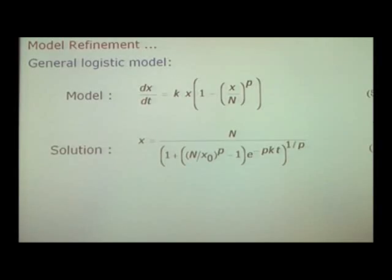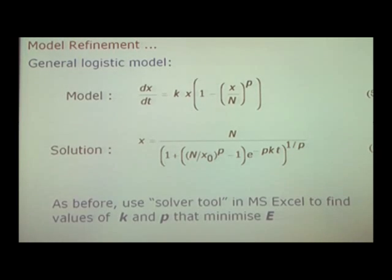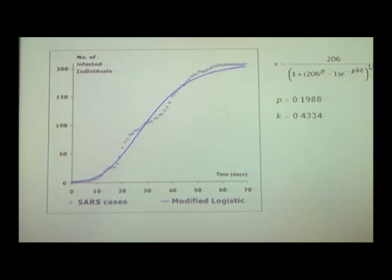We can still go back to our original model by letting p to be 1. It will still work. So this is a little bit more general. So this is our general logistic model. And if you do that, then we get a solution like this. And we can again use the tool that we have by varying the values of k and p to minimize e. And this is a result. It gets slightly better.